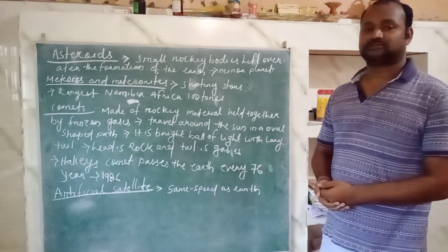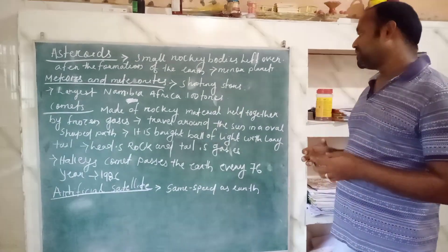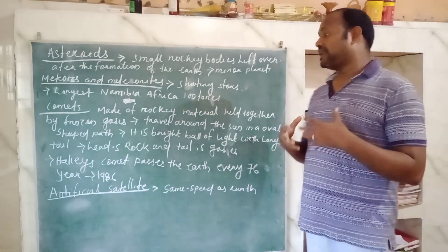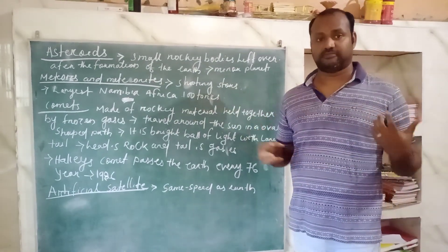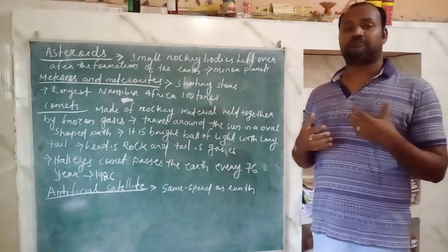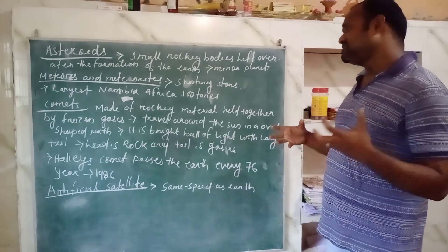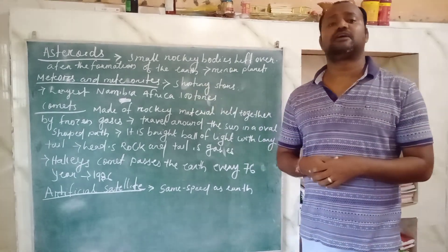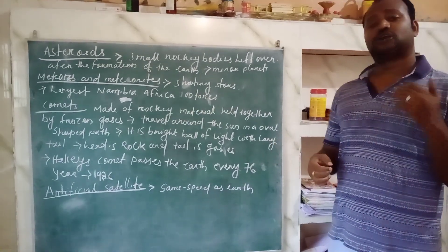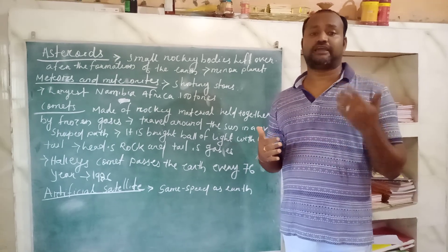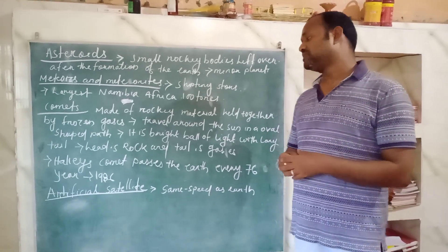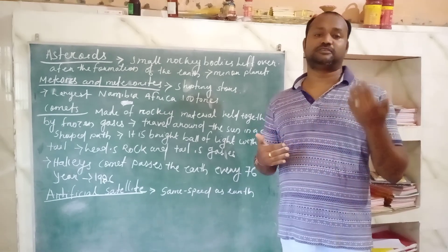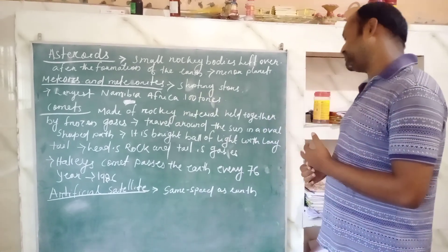Let's discuss about comets. Comets are made up of rocky materials held together by frozen gases, and they travel around the sun. Comets travel around the sun in an oval path. The head of the comet is made up of solid material and the tail is made up of gaseous material. One such comet that comes into contact with the Earth every 76 years is Halley's Comet. We last saw it in 1986.